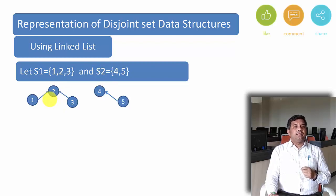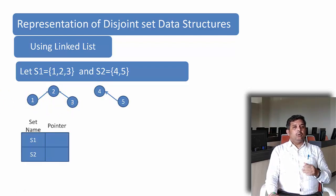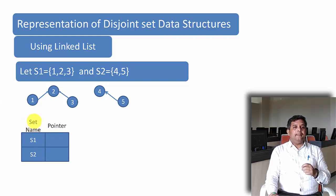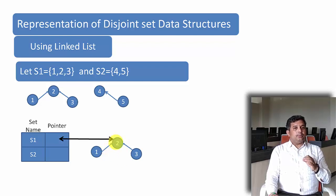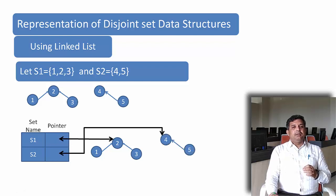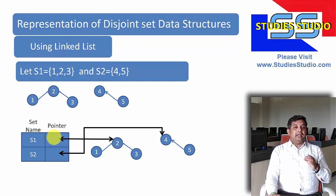In this representation, as compared to a general linked list, the link is pointing up — always the elements will be pointing to the representative. If I want to represent with the help of a linked list, I will have an array with two fields: the first field will contain the set name and the second field will contain the pointer, and the pointer keeps the address of the representative. Now, 2 is the representative in this particular set, so the address of 2 will be kept here. Similarly, if 4 is the representative, I will keep the address of 4. If I want to find to which set element 3 belongs, I will find its representative, and through the representative I will find the address. Then I can say it belongs to set S1.